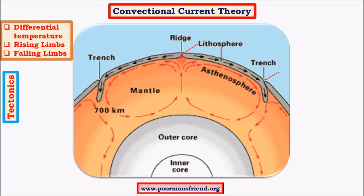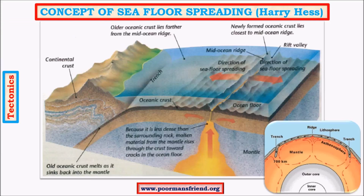At trenches, the denser plate subducts below the less dense plate. The plate with greater density plunges below the plate with lesser density. This is what convection current theory is all about — it explains the movement of lithospheric plates away from or toward each other.